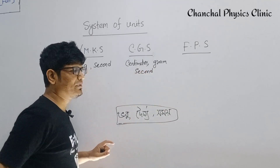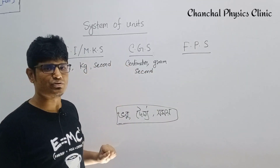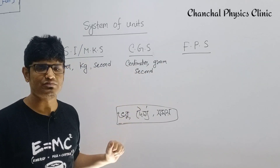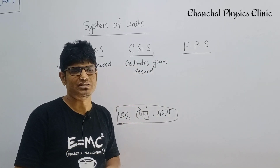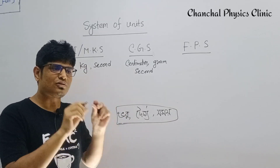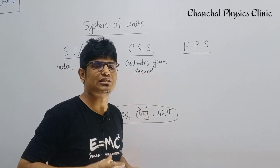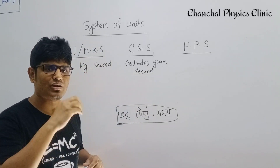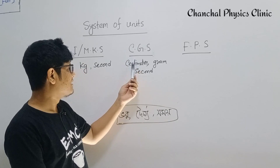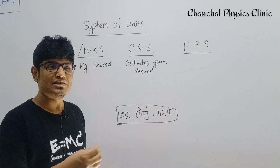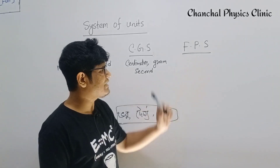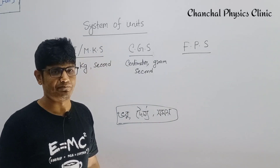In the CGS system, we use centimeters for length, grams for mass, and seconds for time. In the FPS system, F stands for foot, P stands for pound, and S stands for second.